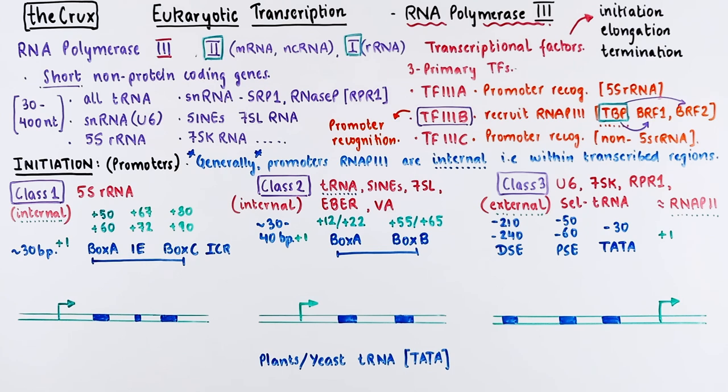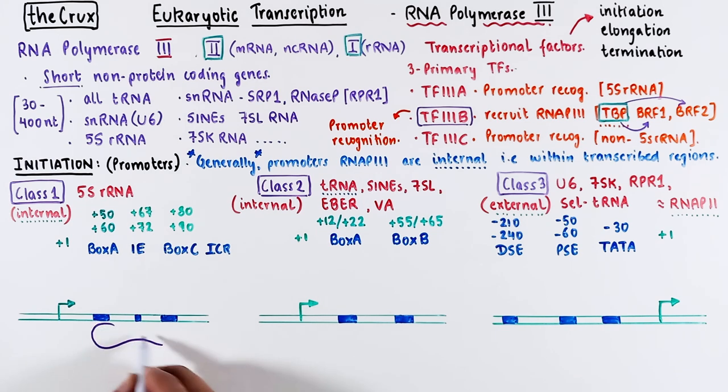We have three classes of promoters. Therefore, each promoter has its own special way of initiating transcription. For class 1 promoters, the process begins with TF3A, recognizing the box A and box C.